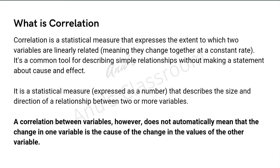Correlation is a very common tool used for describing simple relationships without making any statement about cause or effect. It is a statistical measure expressed as a number which describes both the size and direction of a relationship between two or more variables — size meaning how strong the correlation is, and direction meaning whether it is positive or negative, that is directly or indirectly proportional.